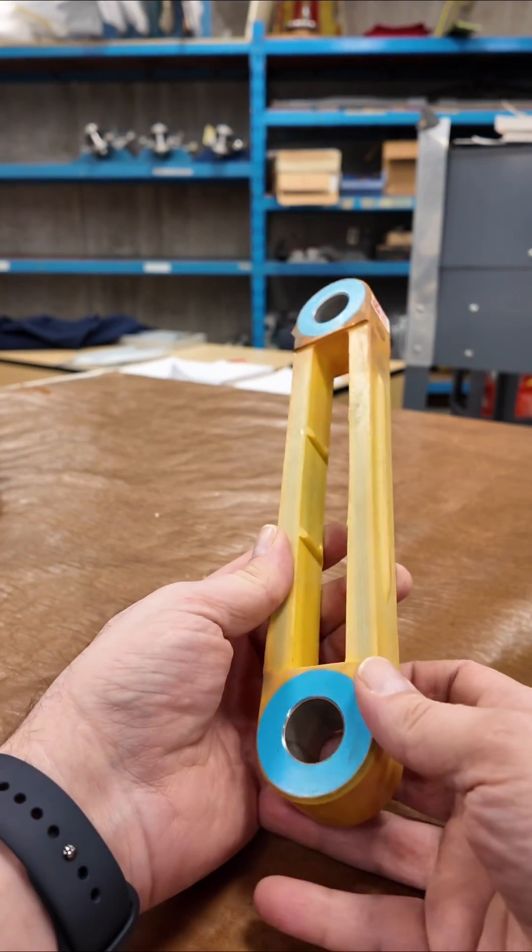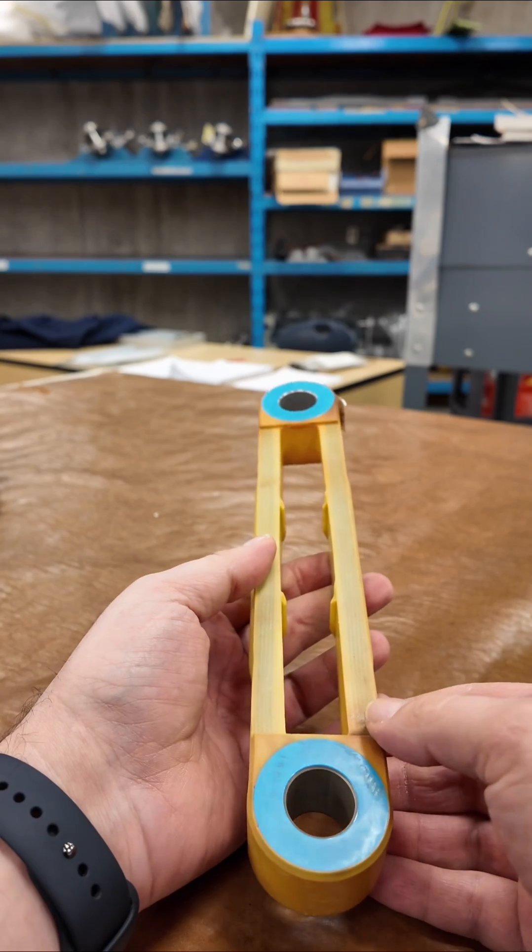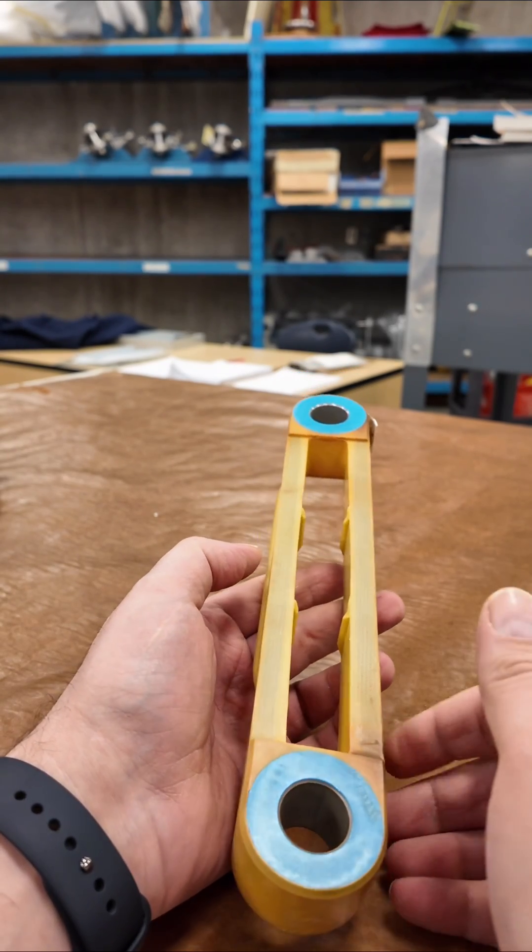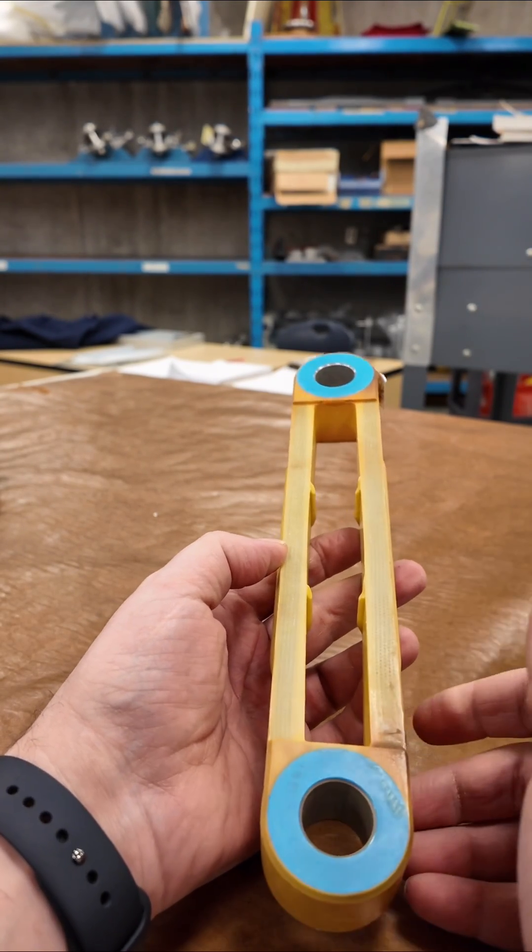A TT strap or tension torsion strap is a device that takes up the tension and torsional loads of the rotor blade.